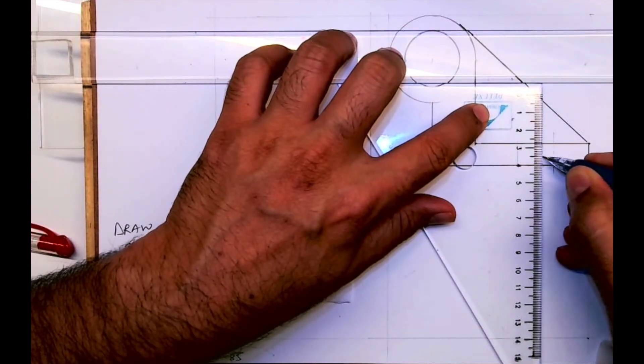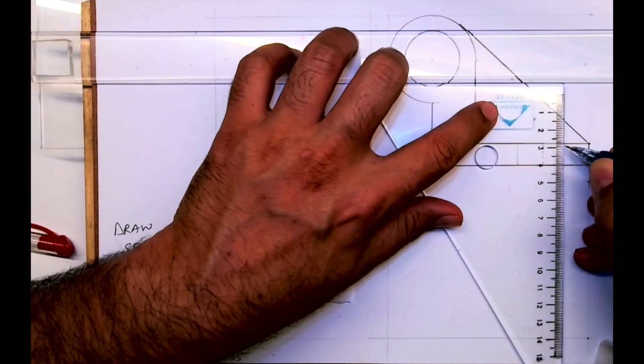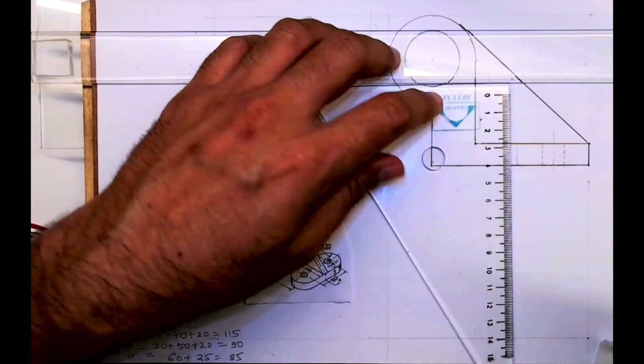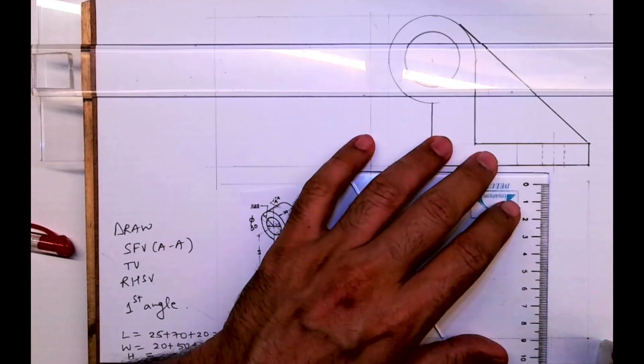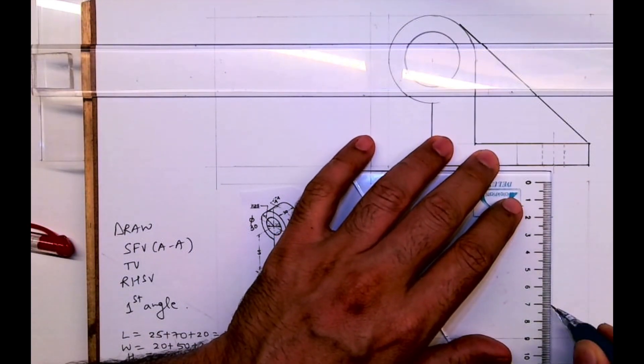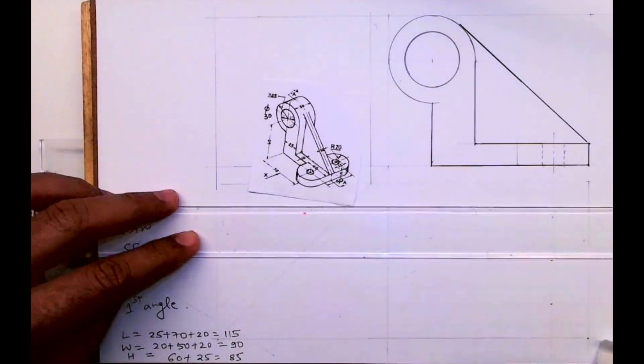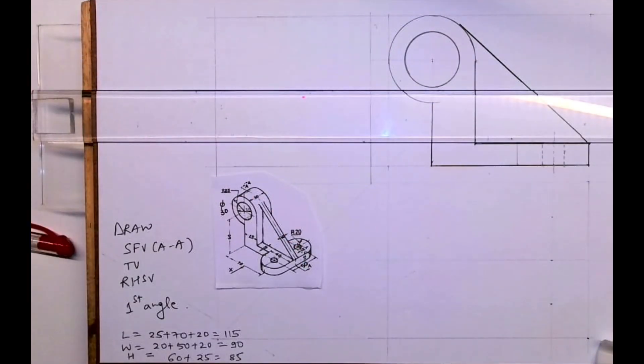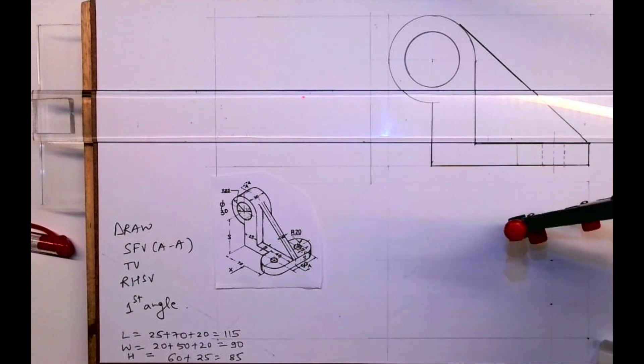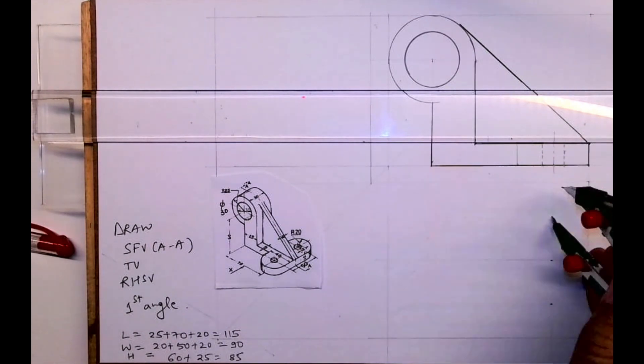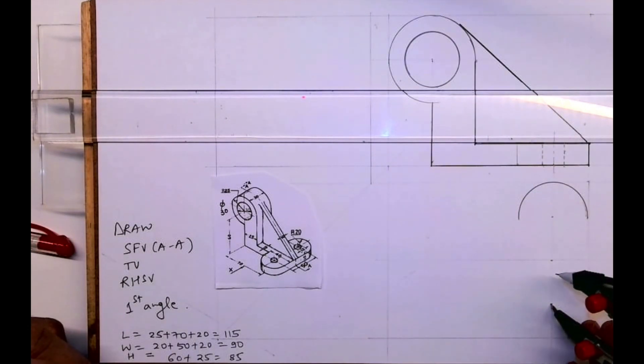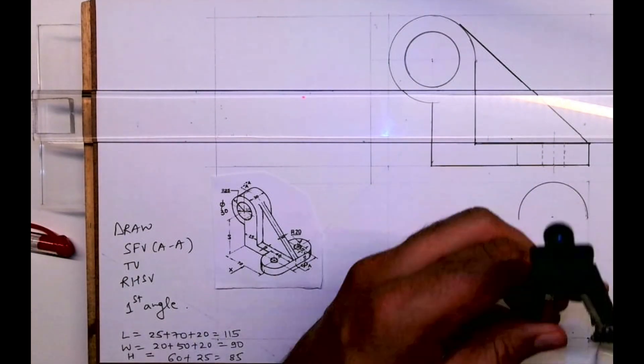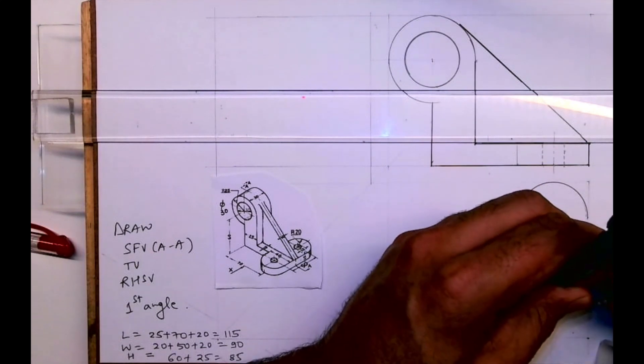And I will draw dotted line. So we are done with front view. Now take this axis line, I will mark 20 from up as well as down, and I'll mark mid point. From here I will take radius 20, from here I will take radius 20, from here also radius 20.